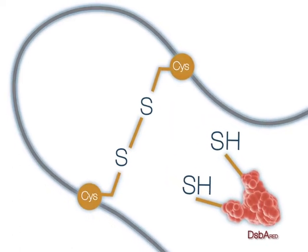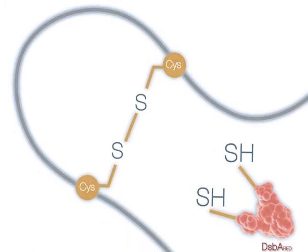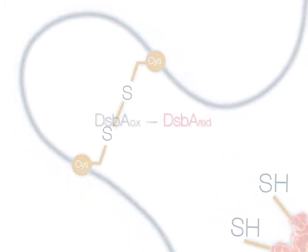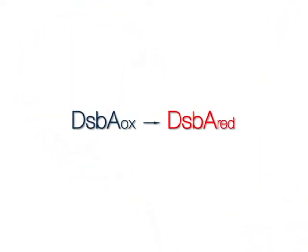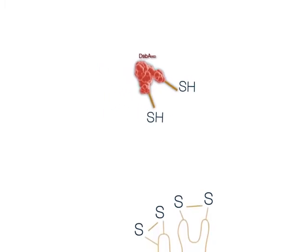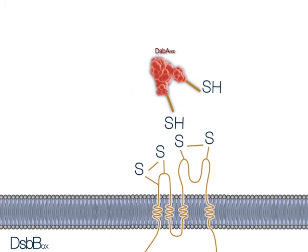This step results in the oxidation of the cysteine thiols of the substrate protein, resulting in the formation of a disulfide bond and the subsequent reduction of DSB-A. The reduced DSB-A is regenerated back to its active oxidized state by the integral cell membrane protein DSB-B.